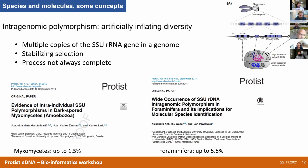Another problem is intragenomic polymorphism. This issue is particularly important with groups that have very long SSU sequences, like the foraminifera, where we can find that within a single genome you can have differences of up to 1.5% between copies — and even up to 5.5% difference within a single foraminiferal cell. This may cause a lot of overestimation of diversity.